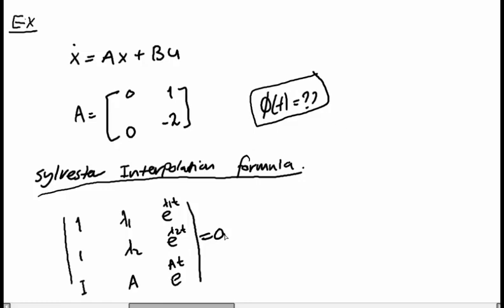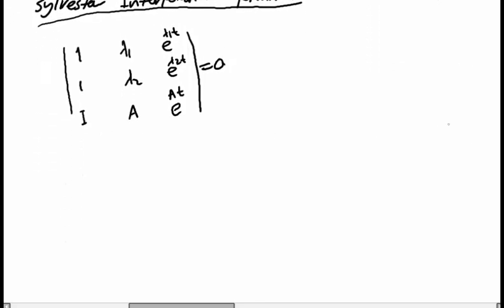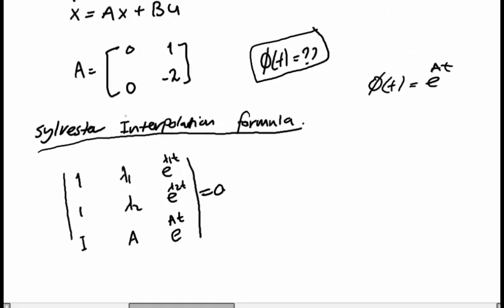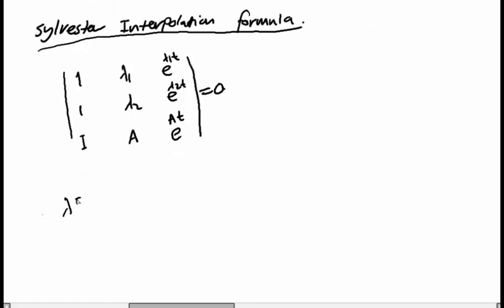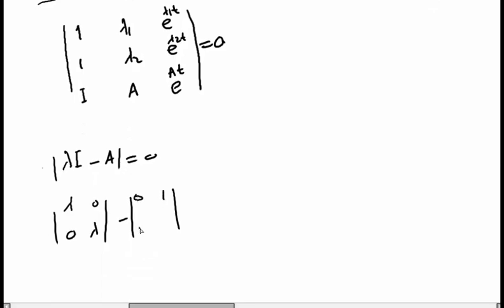We know Φ(t) equals e^(At), which is the state transition matrix. From the dynamic matrix A, which gives the dynamic behavior of the system, we need to find the eigenvalues — the roots of this differential equation. So we compute det(λI − A) = 0. We get lambda minus A, which gives entries: λ−0, −1; 0, λ+2, equal to zero.